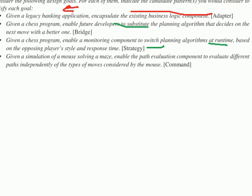Next example: given a simulation of a mouse solving a maze, enable path evaluation to evaluate different paths independently of the types of moves considered. We have different types of moves, each with an option. Sometimes you need a backtracking algorithm to undo some moves and go back. So you need to save the actions and their data — this is the command design pattern. That's what we wanted to cover in this tutorial. Thank you, see you in the next tutorial about design patterns, more in-depth and advanced topics.